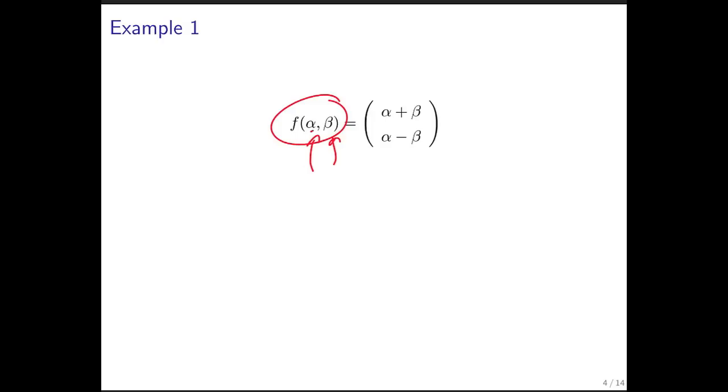So it takes two scalars as input, alpha and beta, and then produces a vector of size 2 as output, where the first component adds the two input scalars, and the second component subtracts the second scalar from the first scalar.